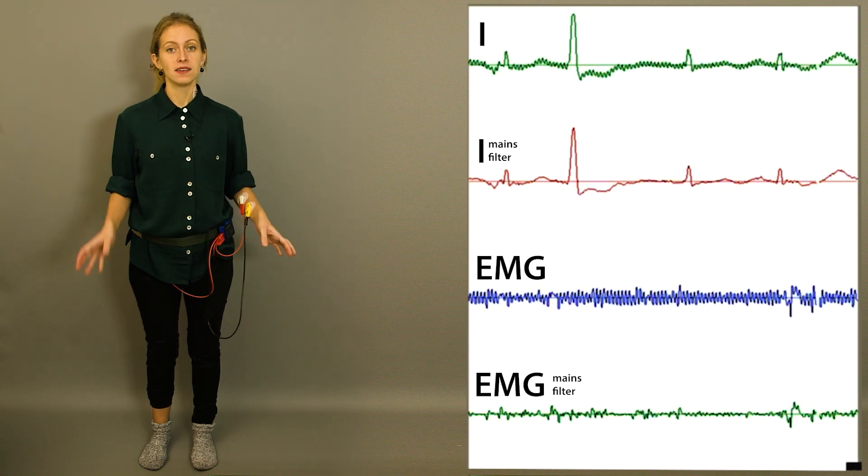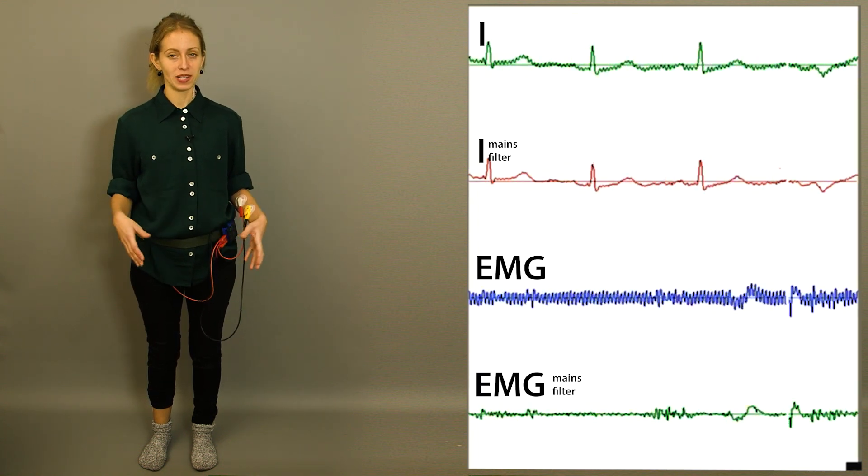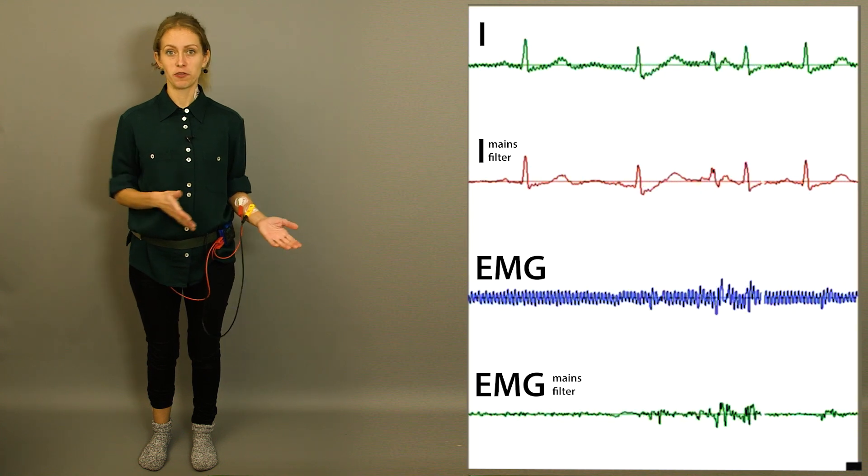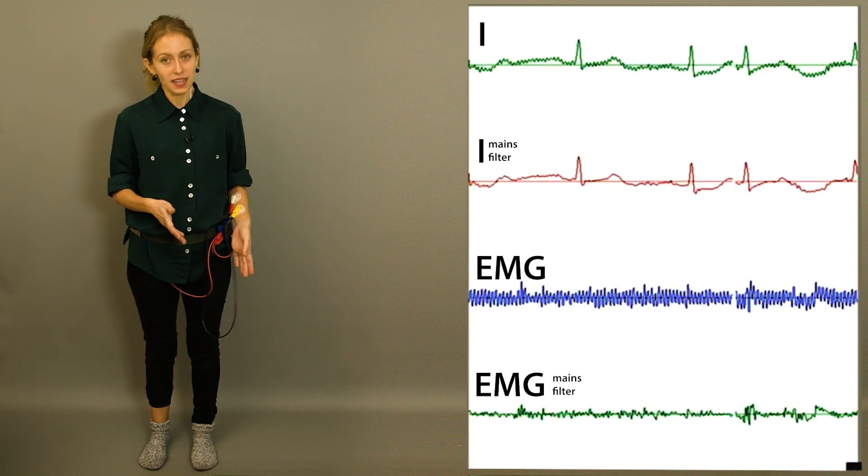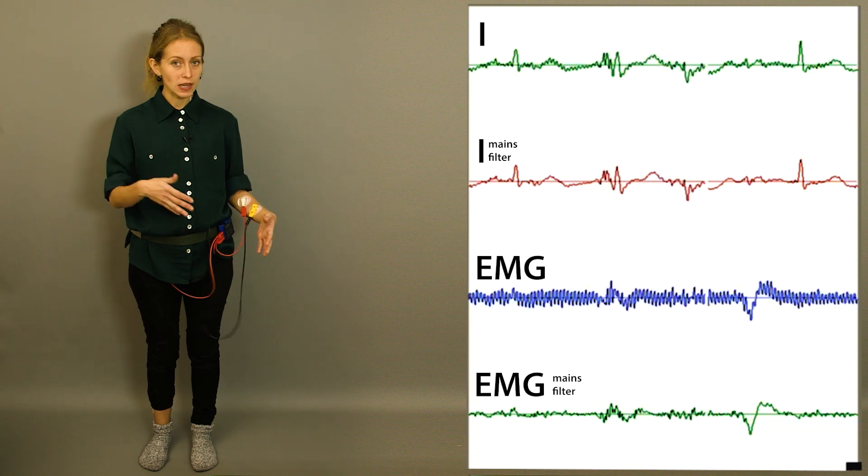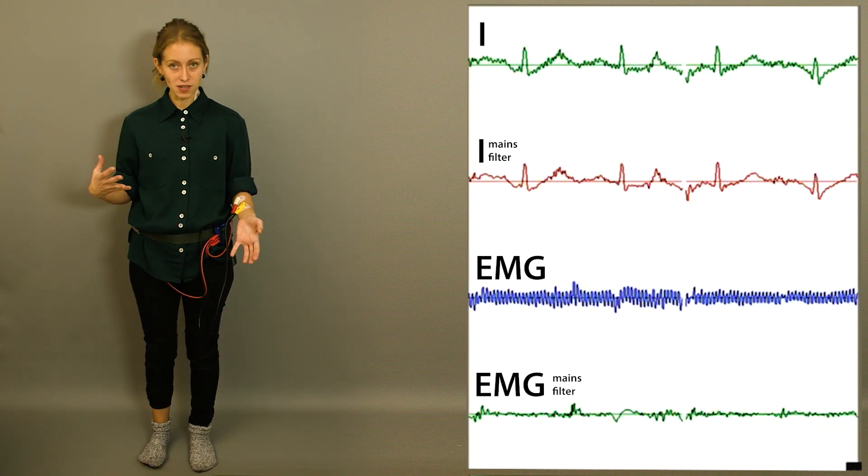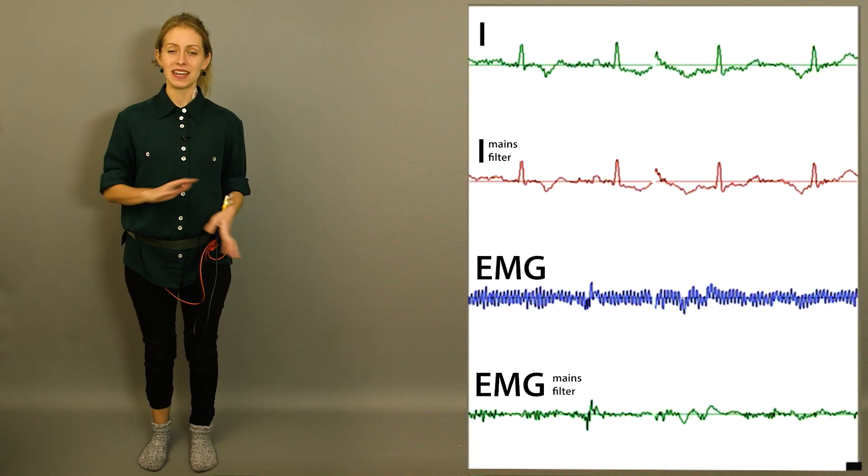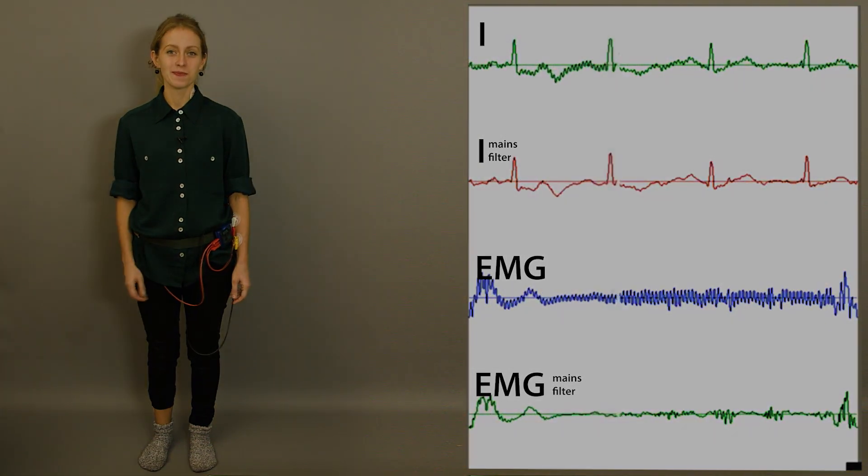In the old analog days, three electrodes were absolutely necessary to get rid of power line interference, whereas today we can equally use two electrodes plus a power line filter and eliminate any power line interference.